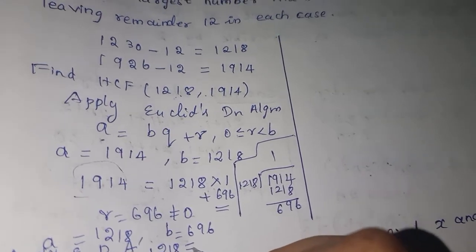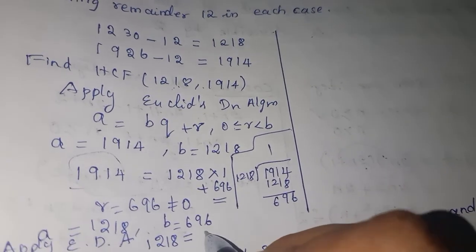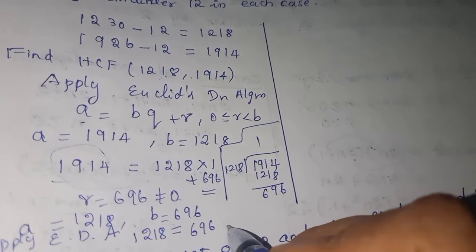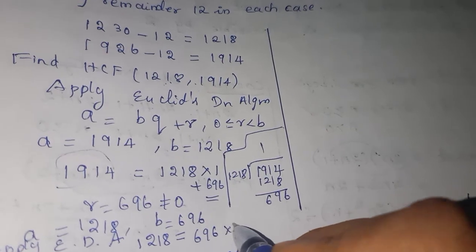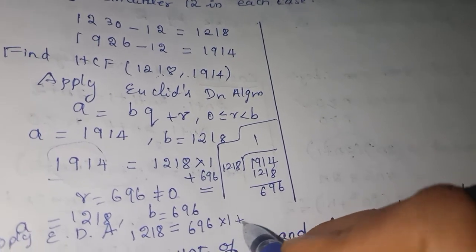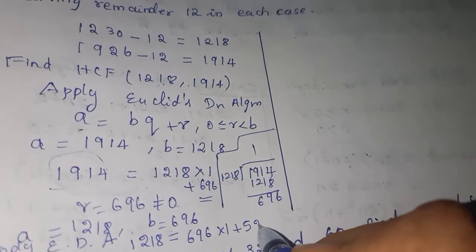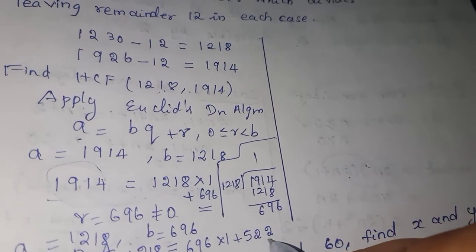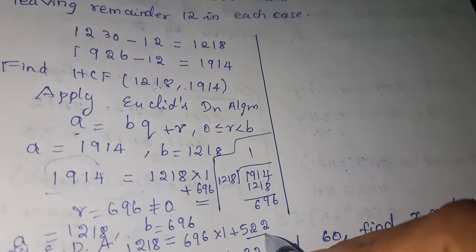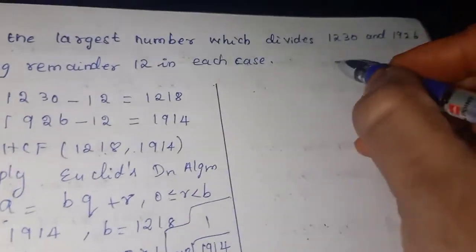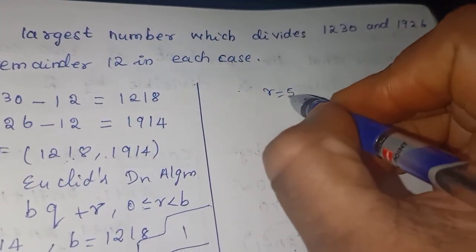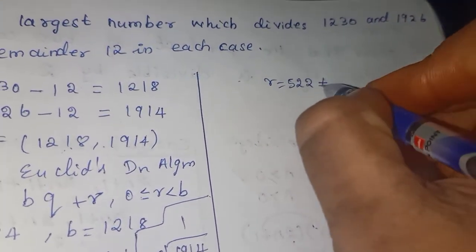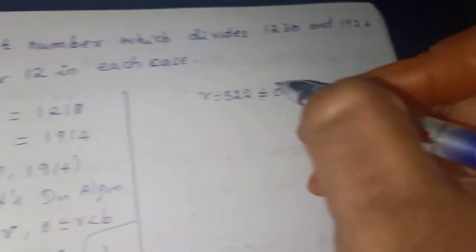1218 = 696 × 1 + 522. The remainder is 522, which is not equal to 0, so we continue.